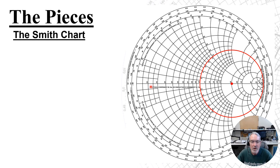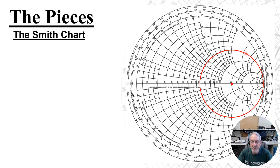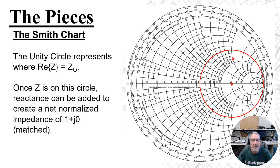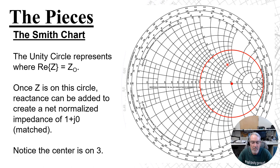An important circle on the Smith chart is the matching circle or unity circle. It represents a place where the real part of the normalized impedance equals Z naught, our characteristic impedance. This ends up being a very useful tool in our design process since we can move this circle on the chart on a constant gamma radius, and we can then determine target impedances at a different point on the transmission line that will eventually get us a match.